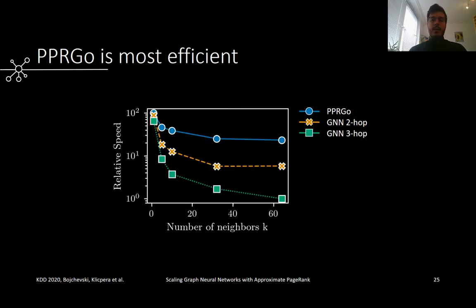Similarly, we wanted to investigate how the size of the neighborhood used to compute predictions affects the runtime. Here, we compare PPR-GO with a two-hop and a three-hop GNN model, which are configured to use the same number of nodes in total. For example, if k equals 30, PPR-GO uses all 30 nodes at once in the propagate phase, the two-hop GCN randomly samples 15 nodes in the first layer and 15 nodes in the second layer, and the three-hop model uses 10 randomly sampled nodes per layer. We see that even though each model uses the same number of neighbors, PPR-GO has the highest relative speed since it avoids the recursive message passing.